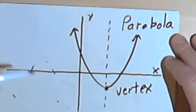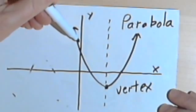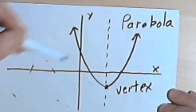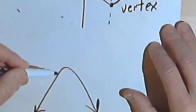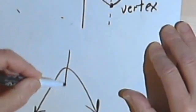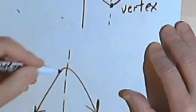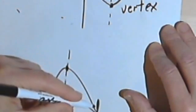The vertex is the place where the graph either goes from having a downward slope to an upward one, or if it opens downward, the vertex would be where the graph goes from moving upward to going downward.